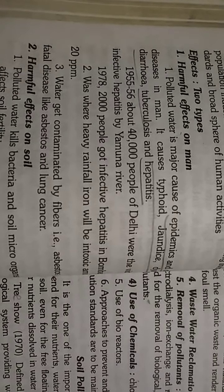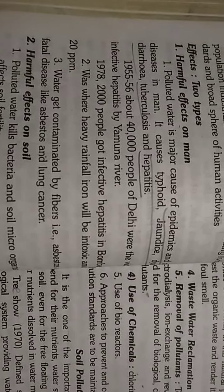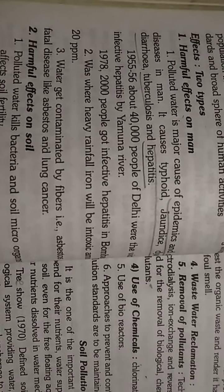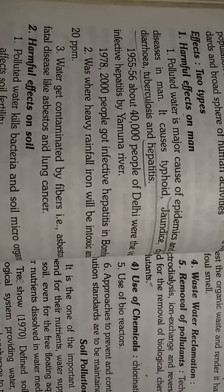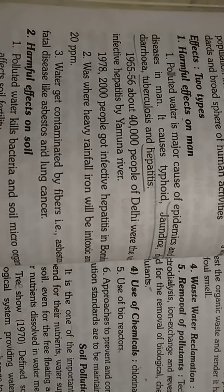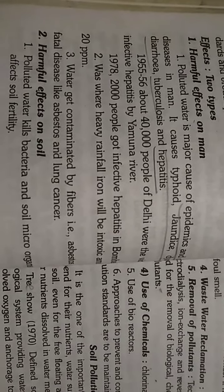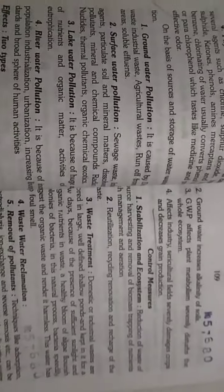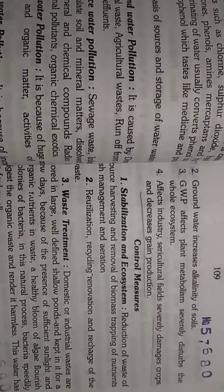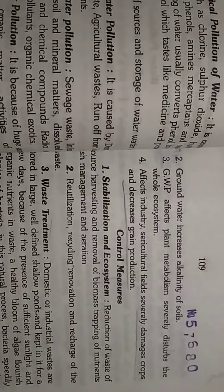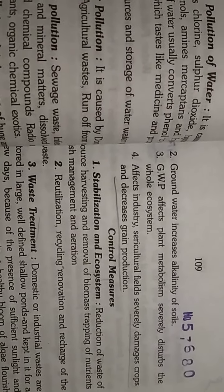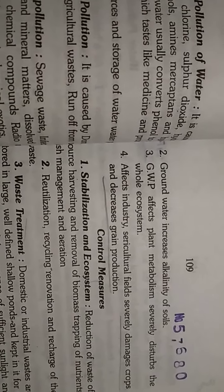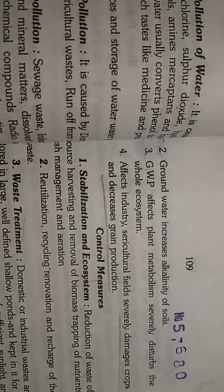Water pollution is also harmful to soil. Whenever water gets polluted mainly with bacteria and microorganisms, it creates problems with soil fertility. When groundwater increases its alkalinity, it affects the overall soil quality.